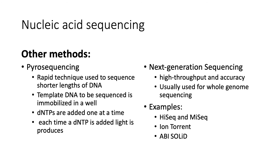We also have more recent nucleic acid sequencing technologies, though Sanger sequencing is still widely used today. The first is pyrosequencing, a rapid technique used to sequence shorter lengths of DNA. Template DNA is immobilized in wells — there can be hundreds to thousands of wells, each containing their own template. Solutions of single dNTPs are added one at a time, and each time a dNTP attaches and extends the growing fragment, light is produced by the compound pyrophosphate — that's why this method is called pyrosequencing. Whichever dNTP was in the well when light was produced is considered the next nucleotide in the growing sequence.